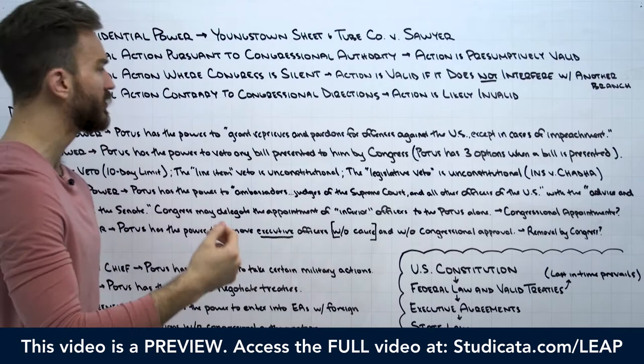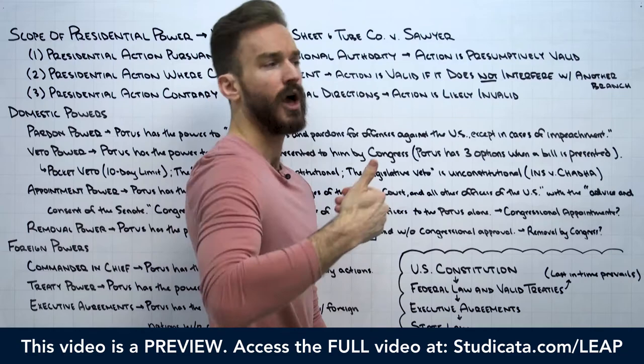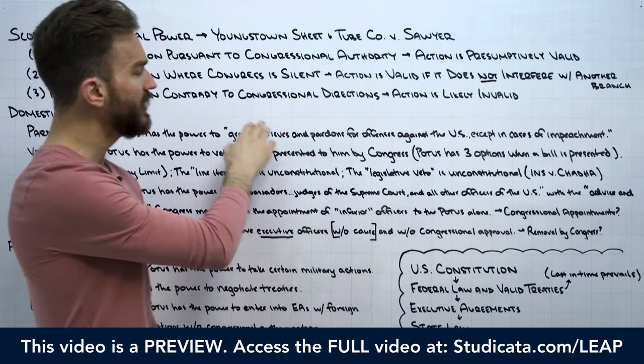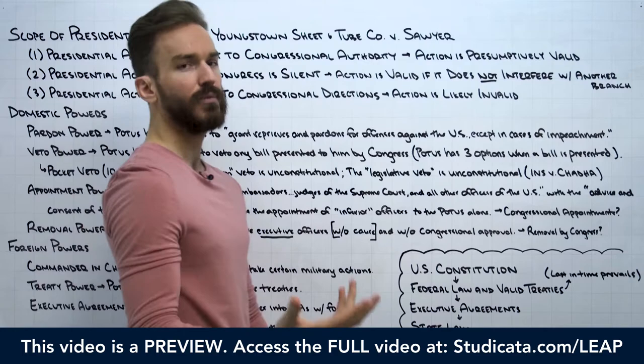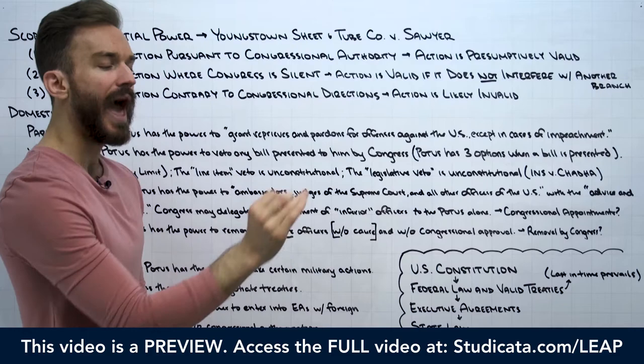Then we moved to Article 1 and the powers of Congress. The main issue there is: any time we see Congress taking action — usually passing a law — we have to ask whether Congress has the power to take that action. When we get to Article 2 and the President, it's the same issue: if we see the President taking some type of action on a constitutional law fact pattern, our issue is going to be whether the President actually has the power under the Constitution to take that action.